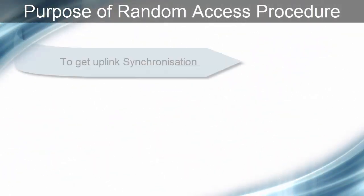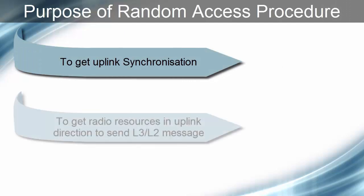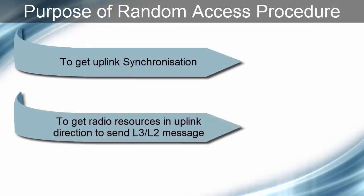Basically, the purpose of Random Access Procedure is to get uplink synchronization and to get radio resource in uplink direction to send L3 or L2 message. For example, after boot up, UE needs to search some suitable cell and send RRC connection request in uplink to trigger the registration process.